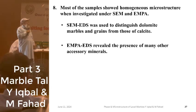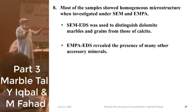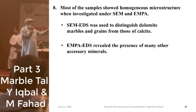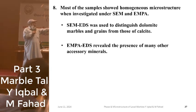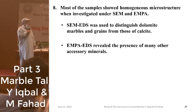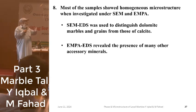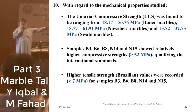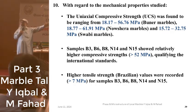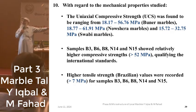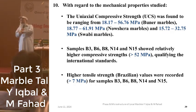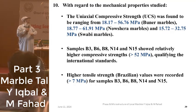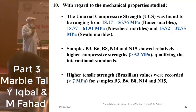Most of the samples showed a homogeneous microstructure when investigated under SEM and EMTA. SEM-EDS was used to distinguish dolomite marble grains from those of calcite, and EMTA-EDS revealed the presence of many other accessory minerals as well. With regard to main physical properties, the bulk density varied from 2.6 to 2.9 g/cm³, and the highest density of 2.9 came from dolomite-containing minerals, not the calcite-containing ones.